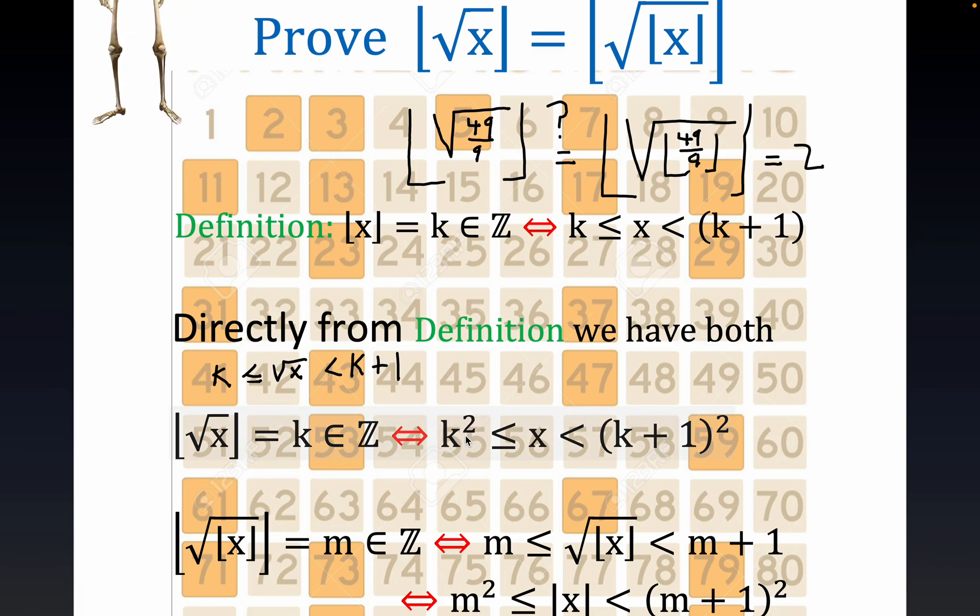When you square both sides, which you can since the square root function is increasing, you get this statement here. Now notice what we get out of this.